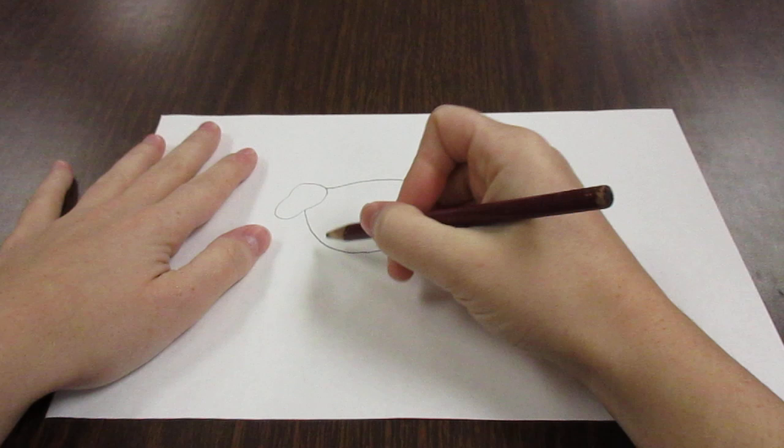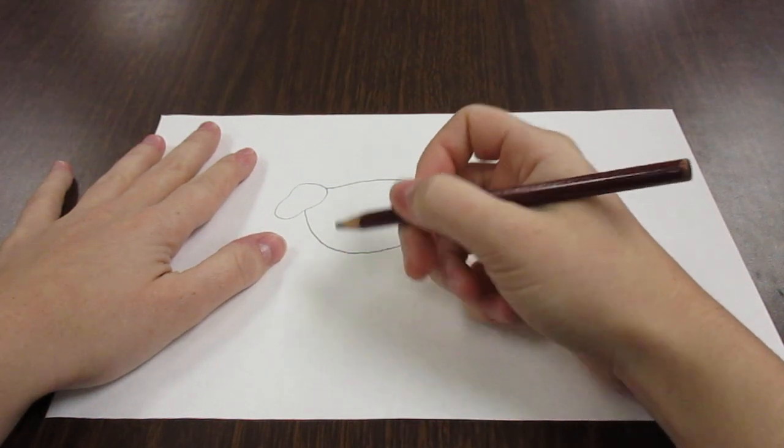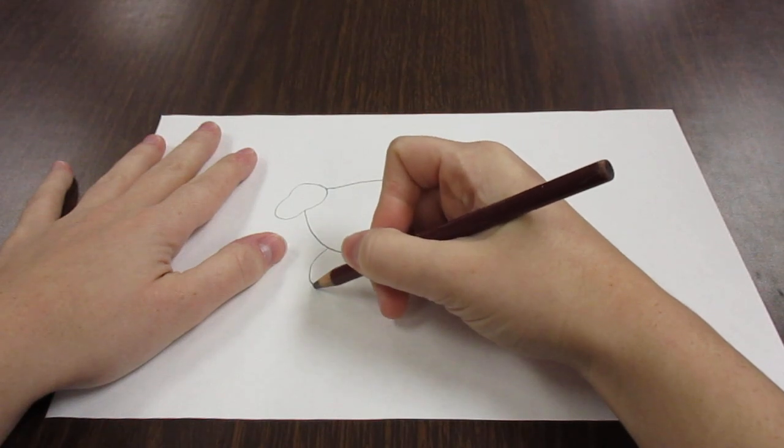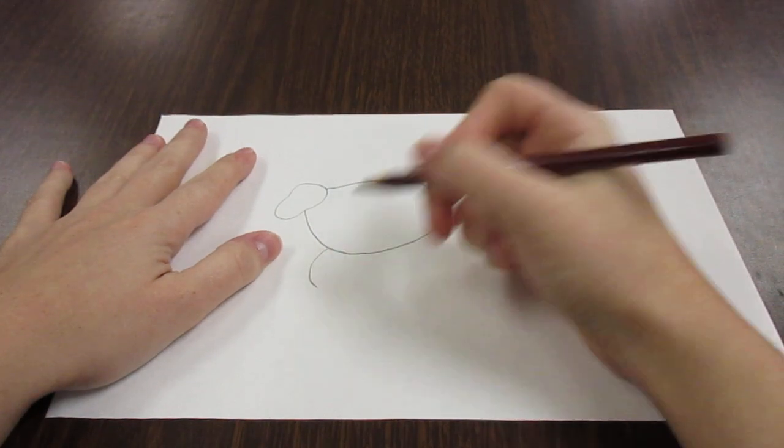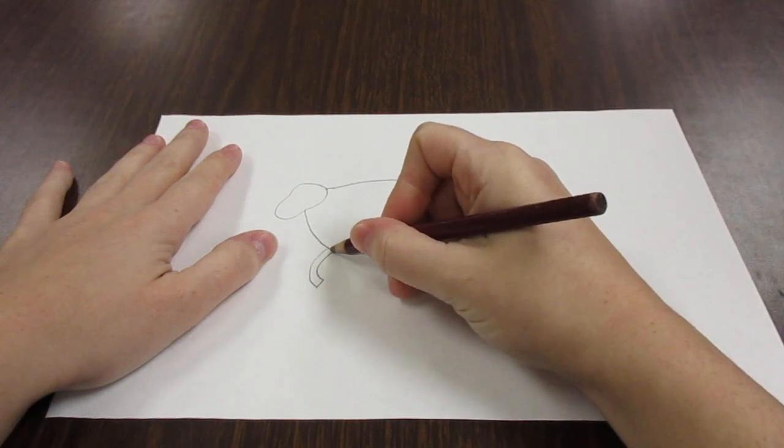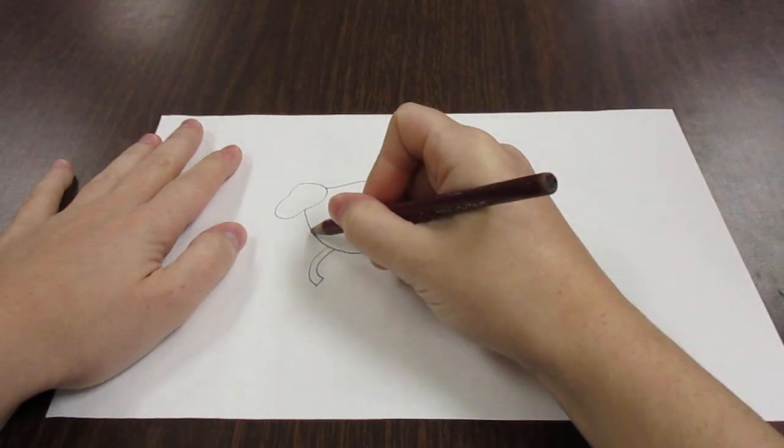Then we'll put the legs. If it was a hunt, the animal wouldn't be standing still, it'd be running. So we need to make the legs running. Straight down wouldn't be running, we need some curved legs. So we start with the curve, make the little foot, and we come back up. We'll do that on all the little legs.